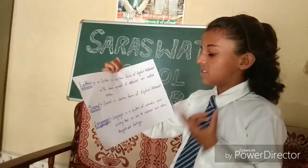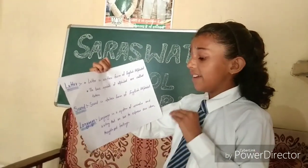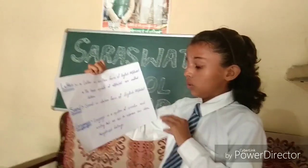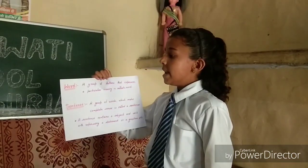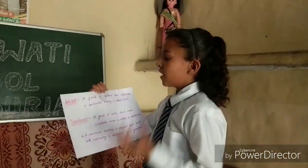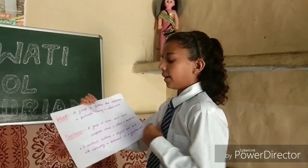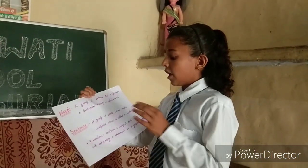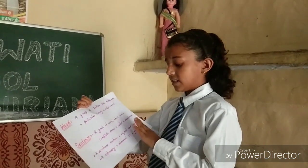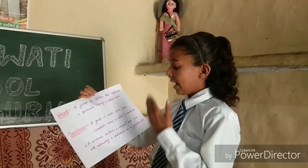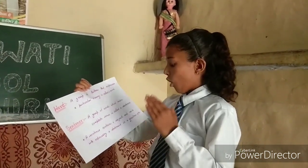Language: language is a system of sounds and writing that we use to express our ideas, thoughts and feelings. Word: a group of letters that express a particular meaning is called a word. Sentence: a group of words which makes complete sense is called a sentence. A sentence contains a subject and verb, expressing a statement or a question.